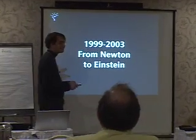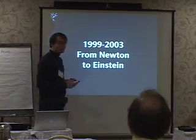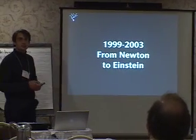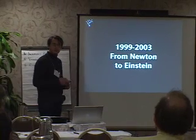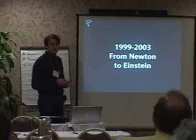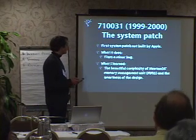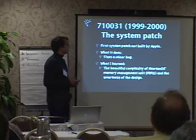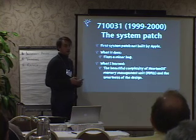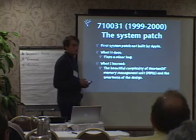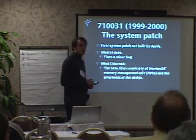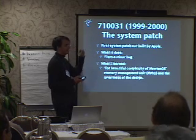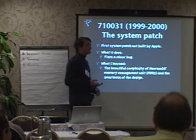So, from 1999 to 2003, from Newton to Einstein, I'm going to present some stuff I've done, and that's why it's very important to be able to build Einstein. The first thing is 710031, which is a stupid codename — blame Walter Smith for it. I didn't come up with it, I just explained it.